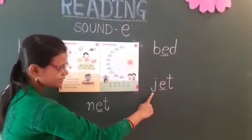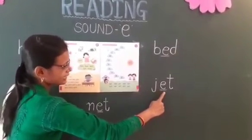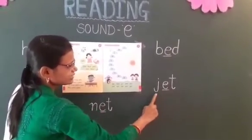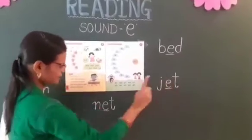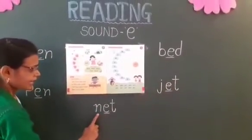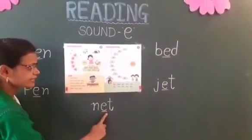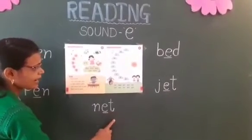Next is J-E-T. J-E-T, jet. N-E-T. N-E-T, net.